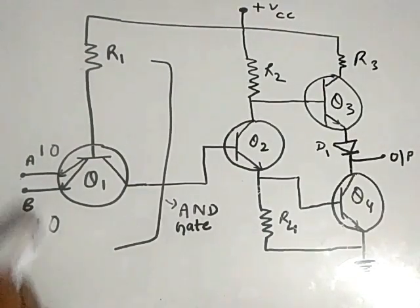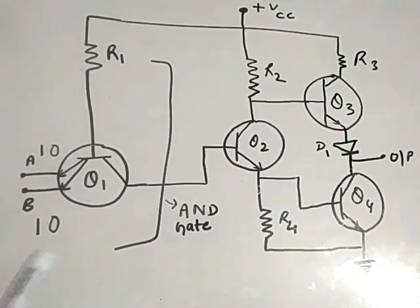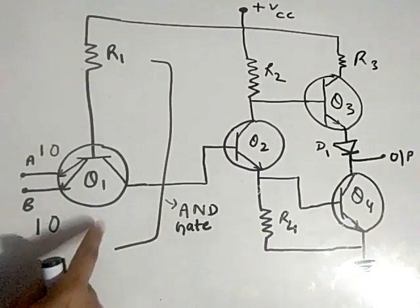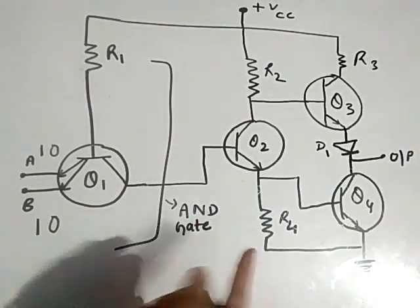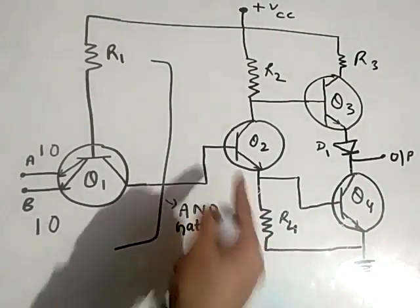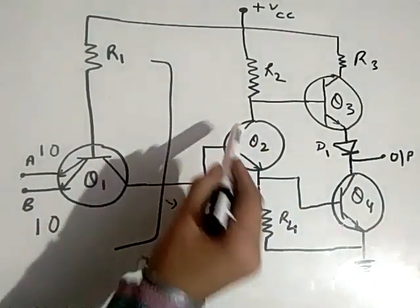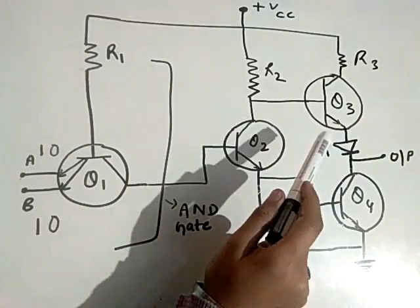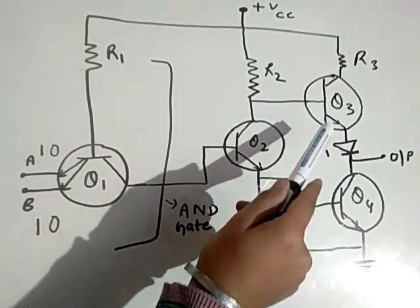If we give input 0,0, the transistor Q1 will have a voltage of 0.7 volts. Q2 will be in cut-off condition because the base voltage is reduced. Because the total current flows from the base, Q4 will also be in cut-off condition. No current will flow through R2 and R4.